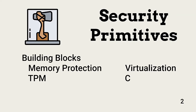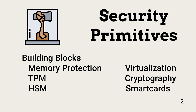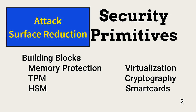Security primitives are building blocks that enable system hardening. System hardening is the reduction of or strengthening of a system's attack surface. They include memory protection, virtualization, trusted platform modules, cryptographic modules, hardware security modules, and smart cards.